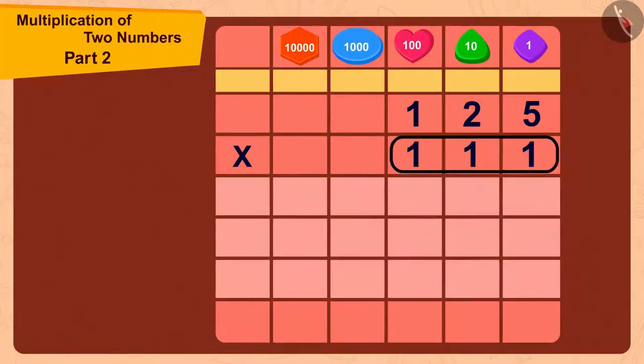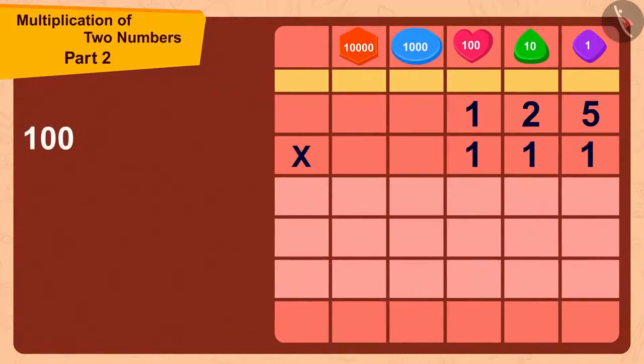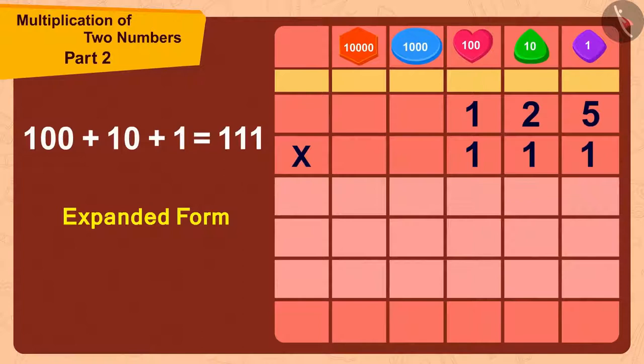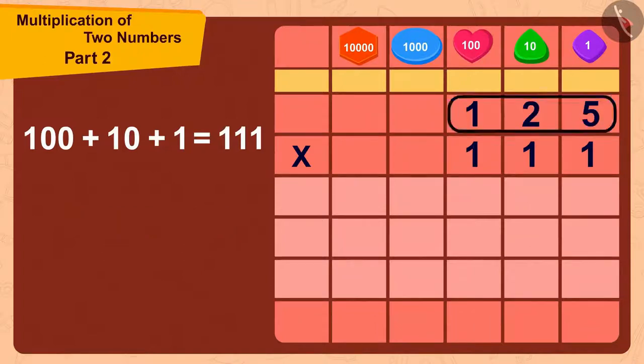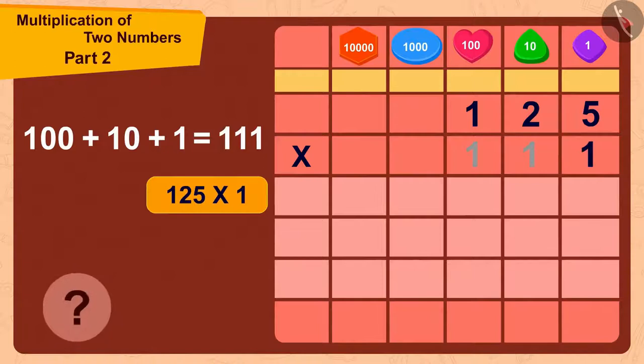We can write 111 in the expanded form by adding 1 and 10 to 100. First, we will multiply 125 with 1. How much is 125 times 1? Exactly, 125.